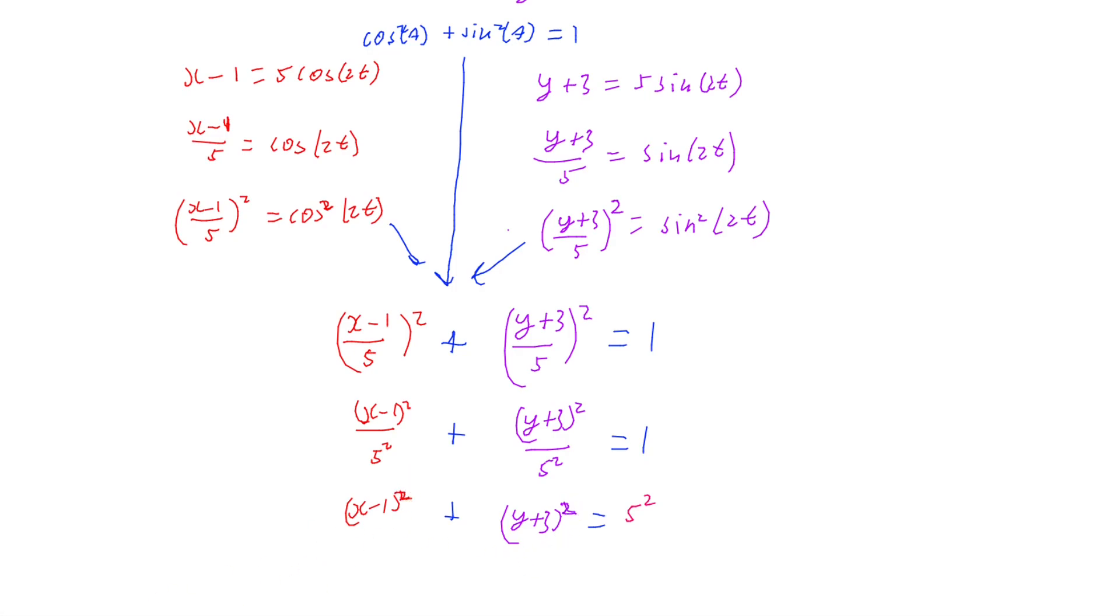So now I've got my Cartesian equation, x minus 1 squared plus y plus 3 squared equals 5 squared. And I can see from that that the shape of this is a circle because this is the basic form of a circle. And it's a circle with the center at the coordinate 1, negative 3 and the radius being 5 because the values that are subtracted off the x and y give us the center and the right hand side squared is giving us the radius.